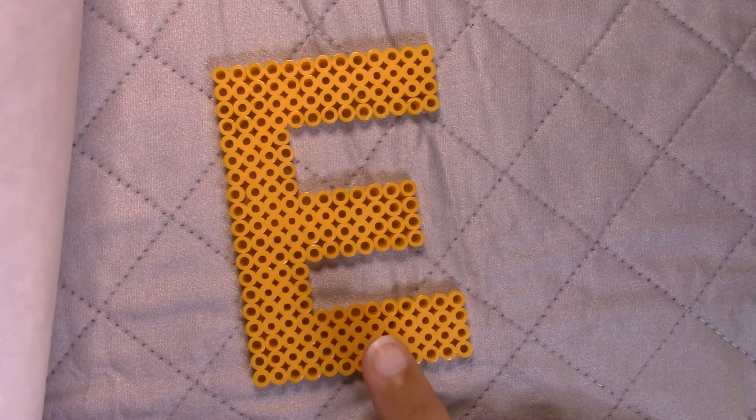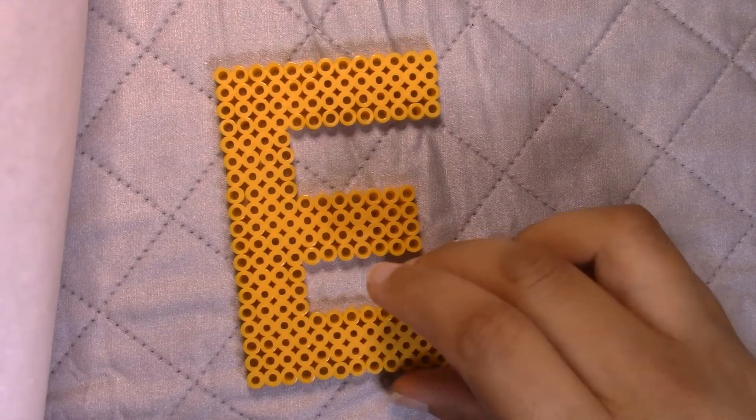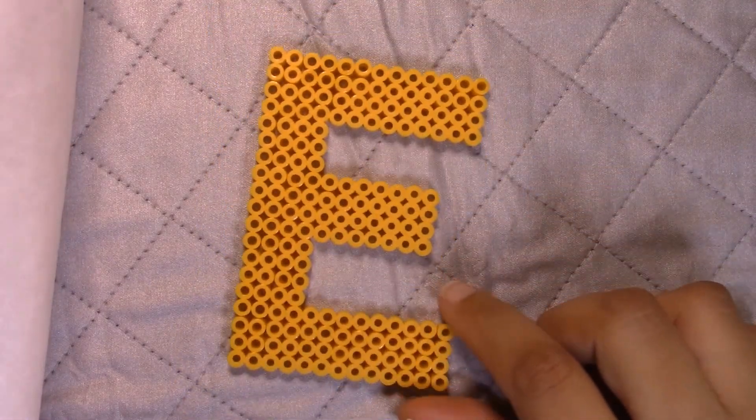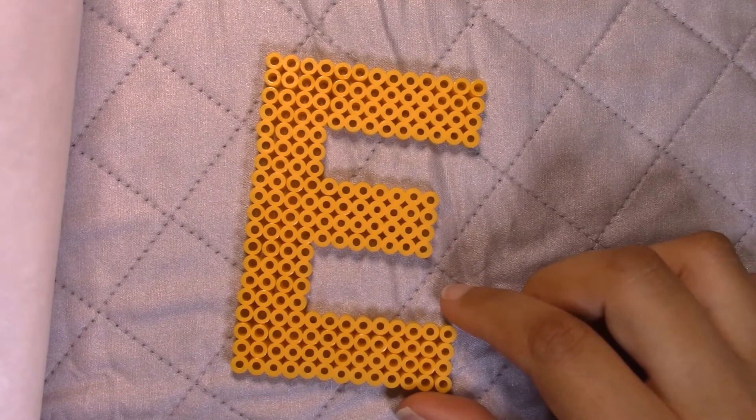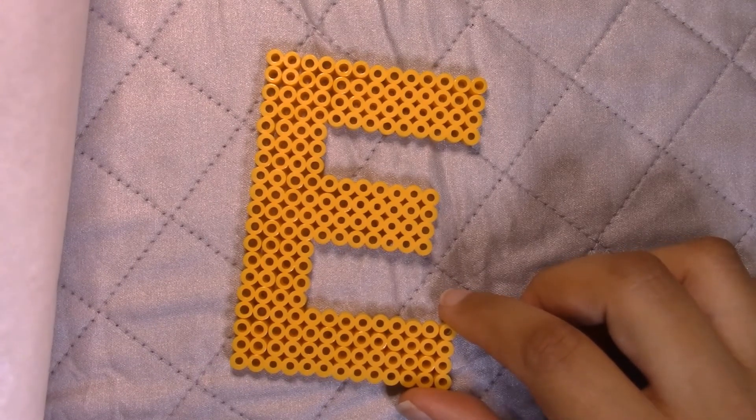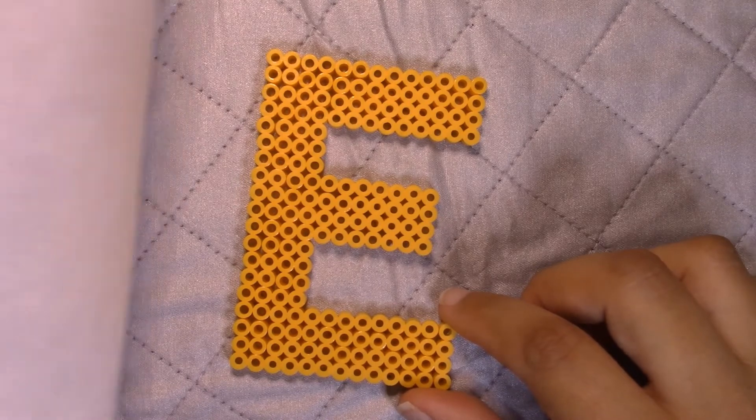So you might want to just let it cool for a moment before you flip it back over and move it to wherever you're going to let it cool. And if there's any spots that you're not happy with the way they look or you want them to be a little bit more fused together, then just place your parchment paper back on top and iron it a little bit more in that section.